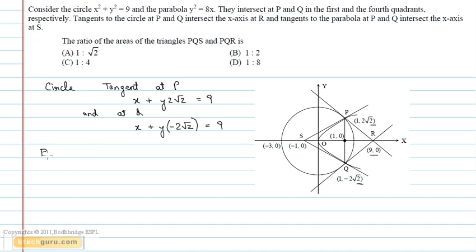The tangent to the parabola at point P is given by the equation y(2√2) = 8(x + 1)/2.